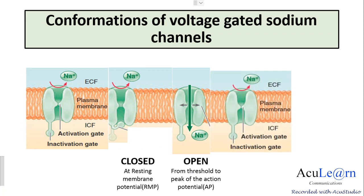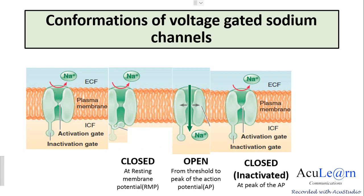Next, you observe the activation gate is closed and the inactivation gate is open, but still there is no influx of sodium ions. This conformation is also called closed but it is not capable of opening, and we call it the inactivated state of the channel. During an action potential this conformation is seen at the peak and up to one-third of the repolarization phase. For the inactivated conformation to change to open, the membrane potential has to reach the resting state, after which with a threshold stimulus it can change to open.